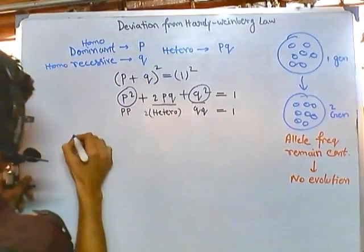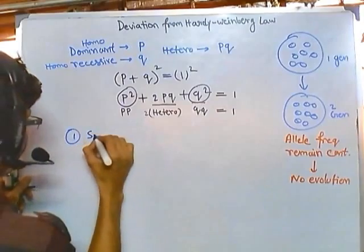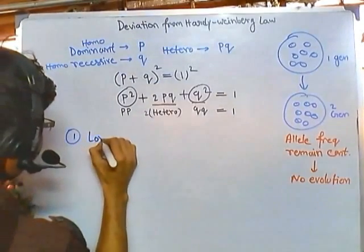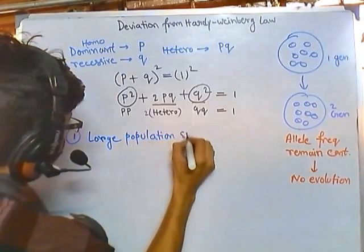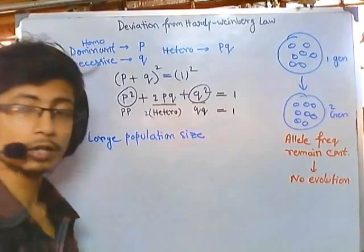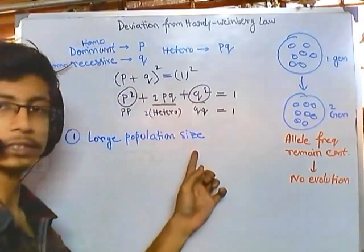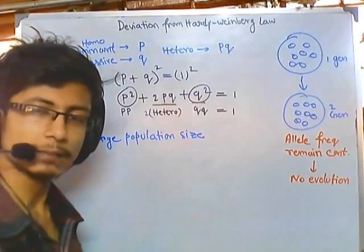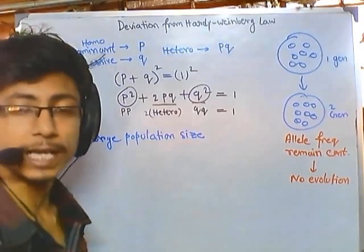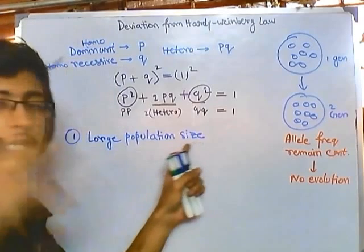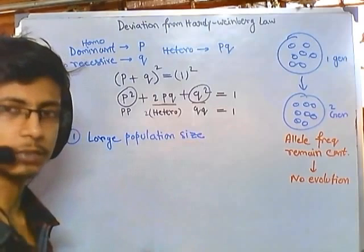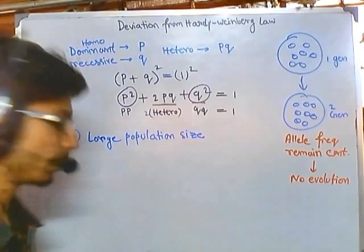The first condition is large population size. For Hardy-Weinberg Law to be fulfilled, we need a large population size. If the population size is smaller, there are more chances of genetic drift, and as a result there is more chance of allelic frequency shuffling. But not always is the population large — due to many reasons, the population can be small.